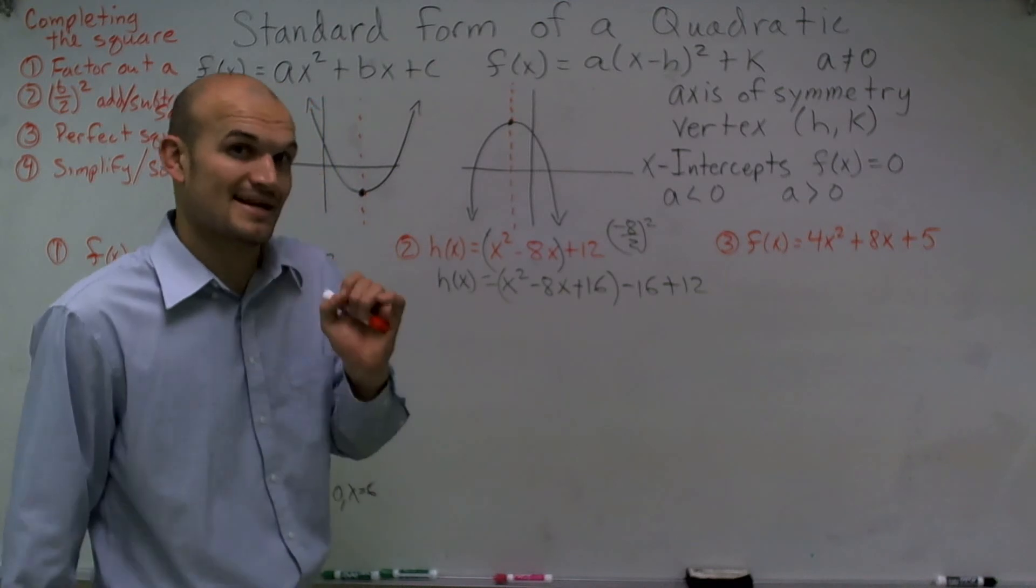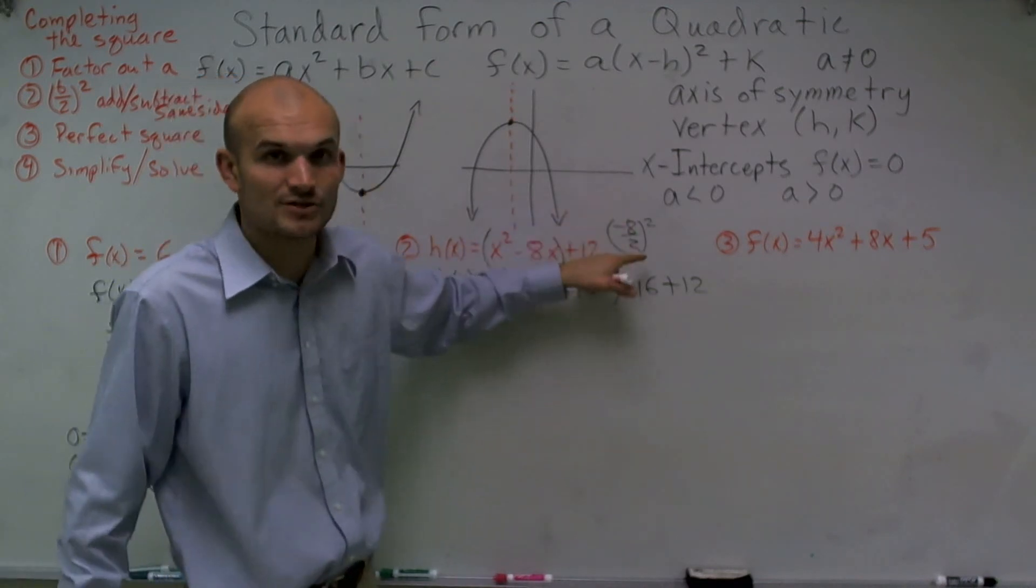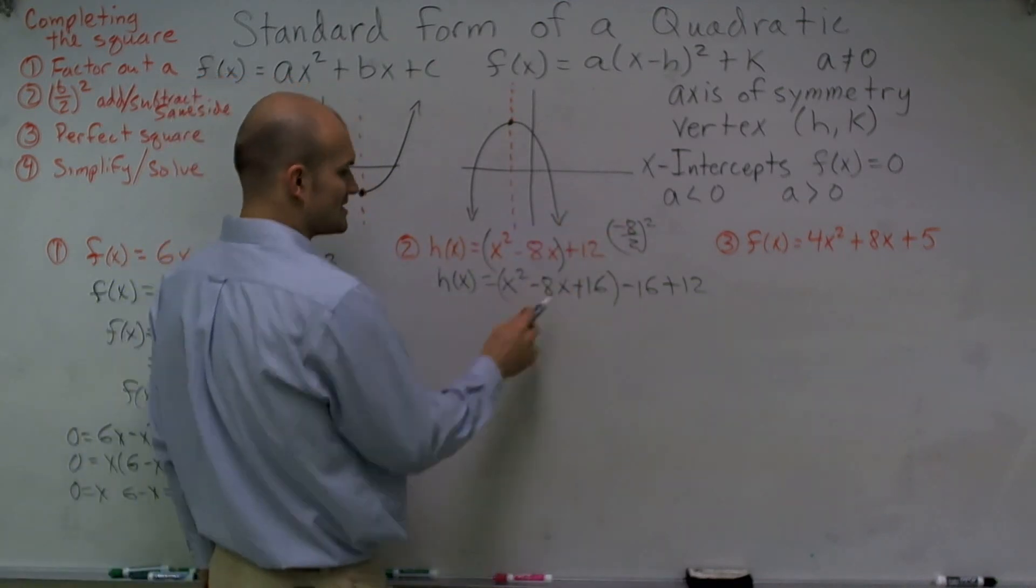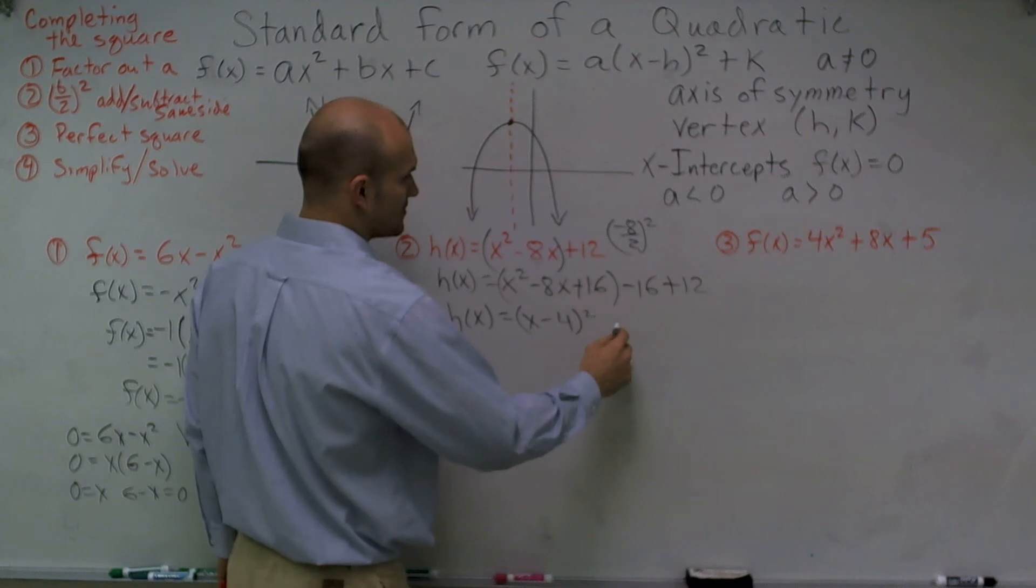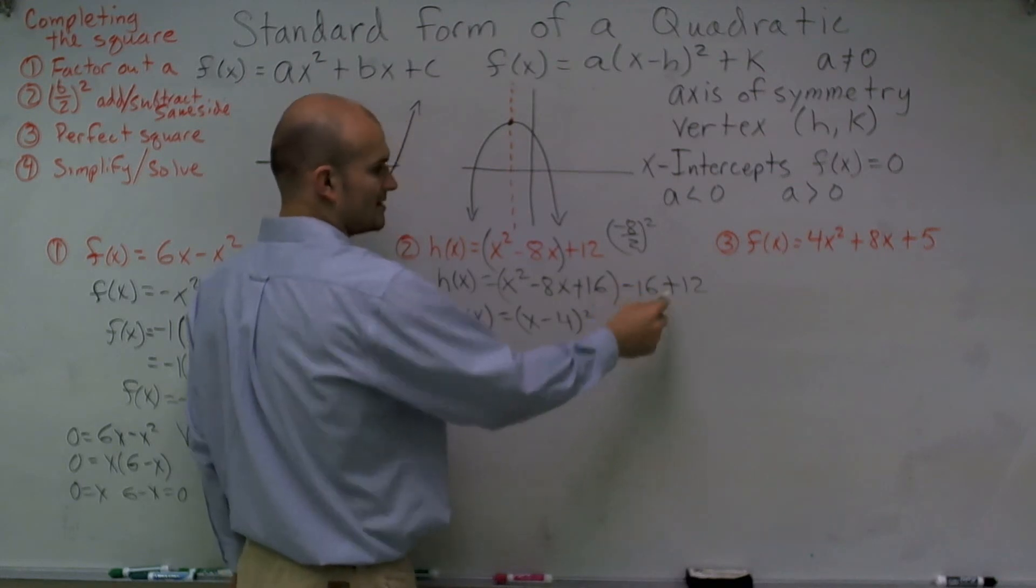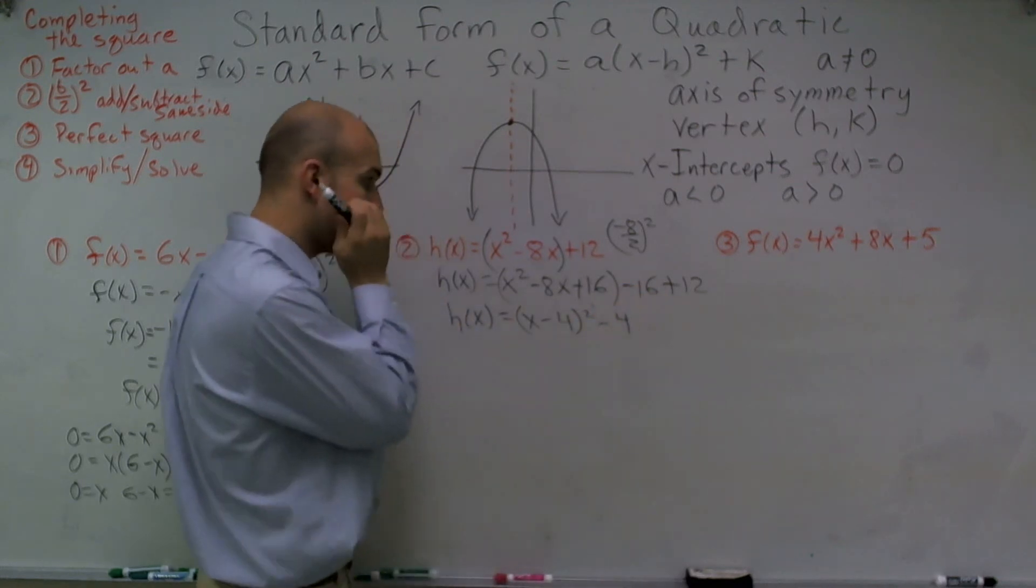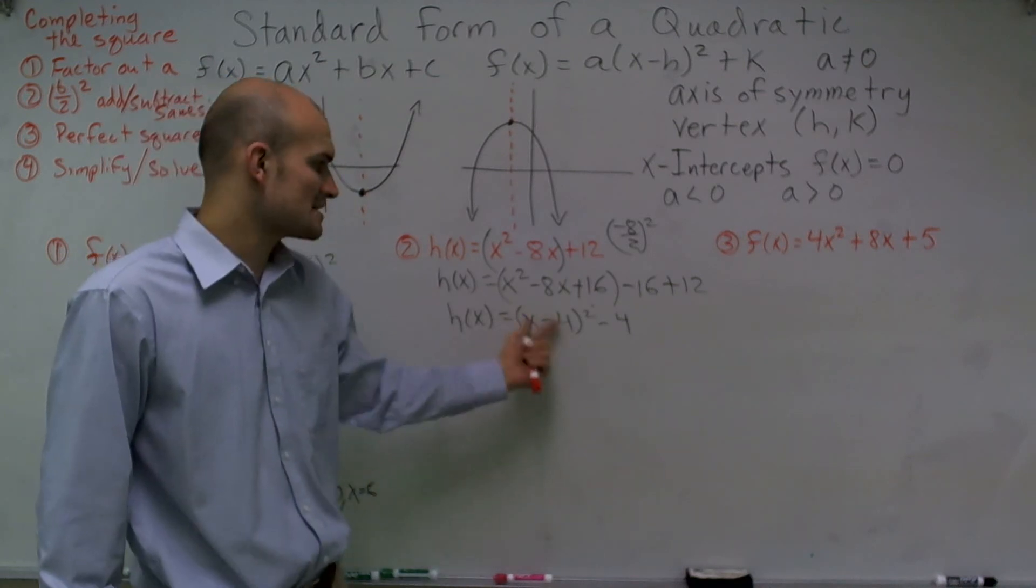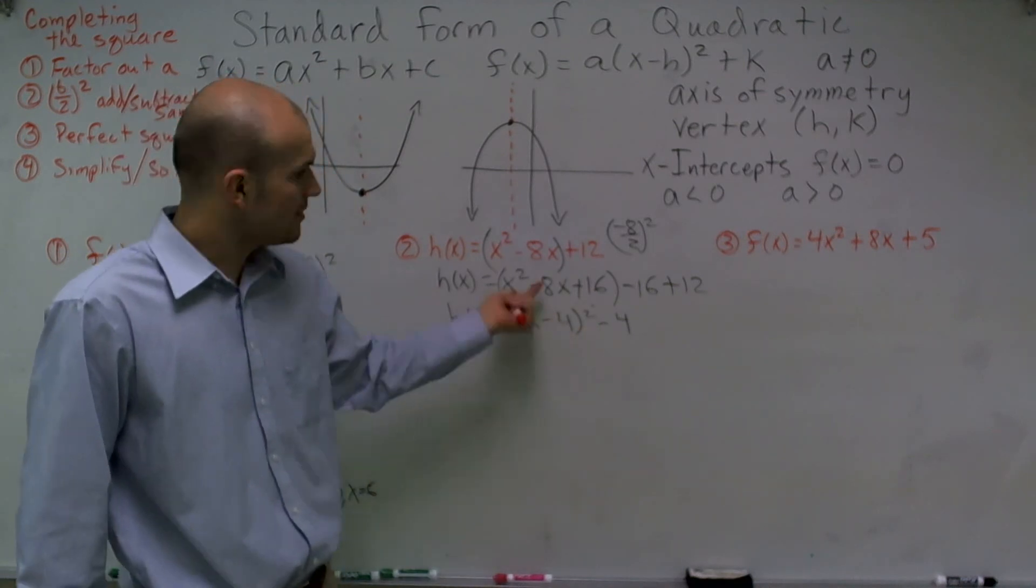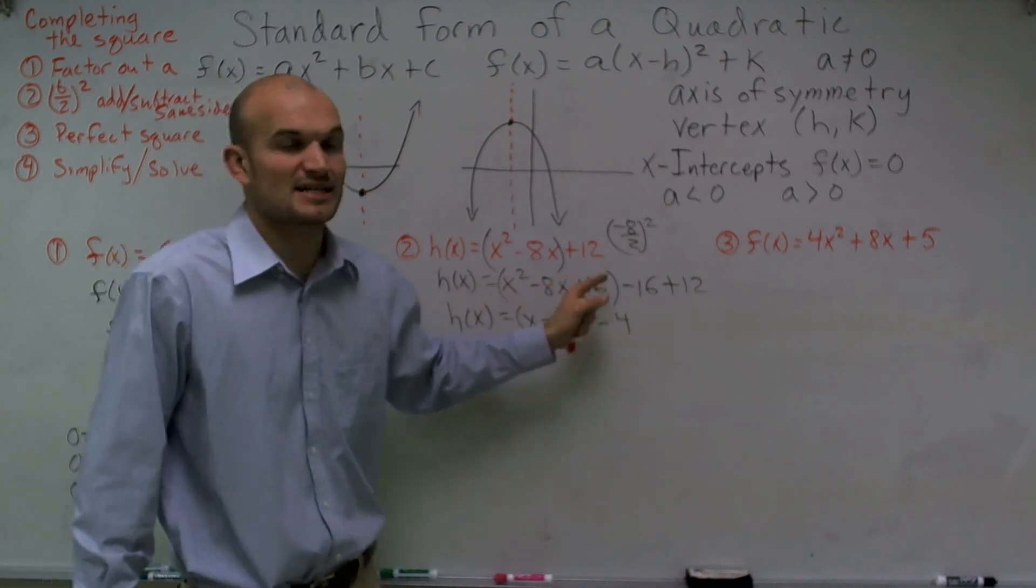Now, remember I said remember that negative 4 because negative 8 divided by 2 gives you negative 4. When I write this as a perfect square, notice where that negative 4 looks. x - 4 squared and then this is negative 4. Now, the reason why this works, if you guys want to test this, just take x - 4, square it, and see what you get. You'll end up getting x² - 8x + 16.